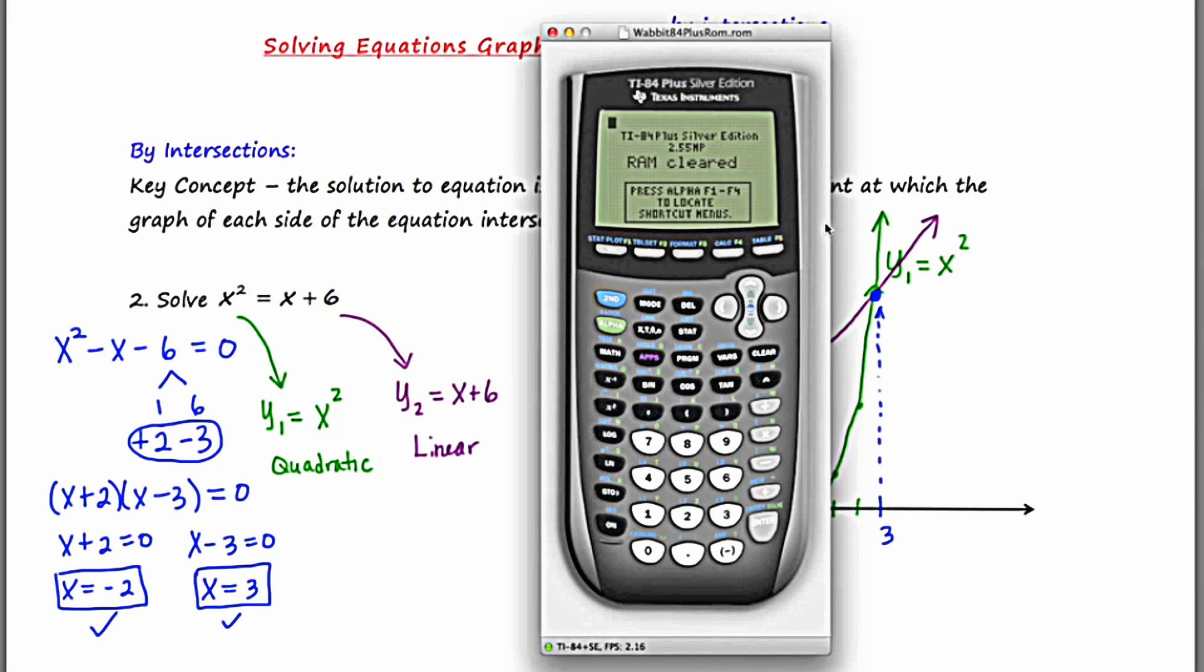So I've got the calculator queued up. Let's press the y equals screen to get us to the graphing part of the calculator. And let's start by typing in the left side, y sub one equals x squared. The squared button is down here on the left in the middle. And now let's go down to y sub two. And let's put an x plus six.